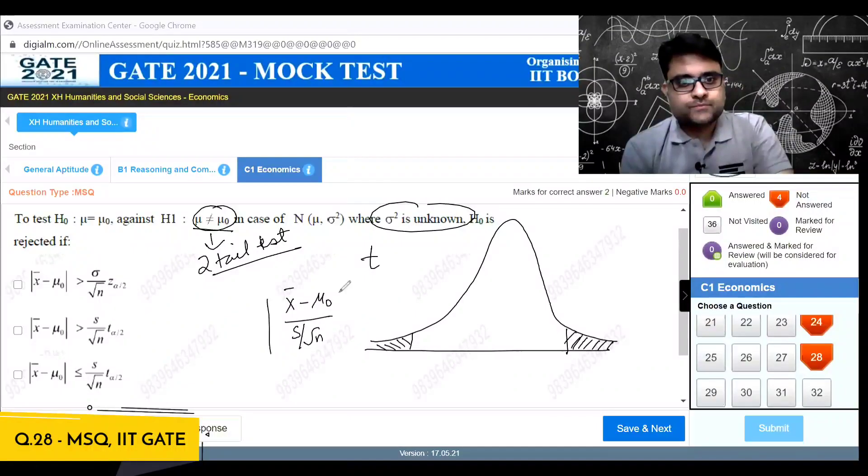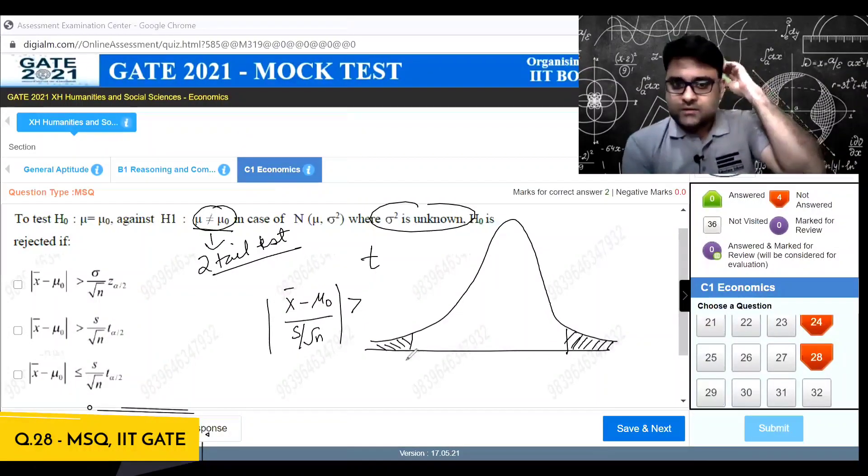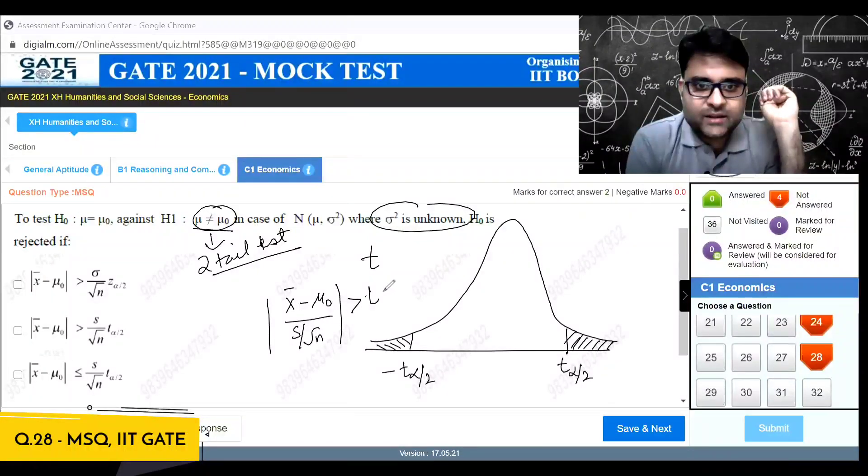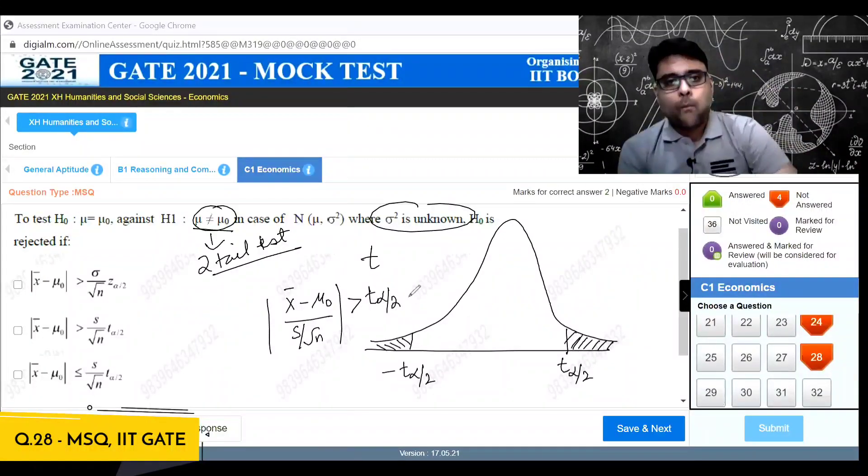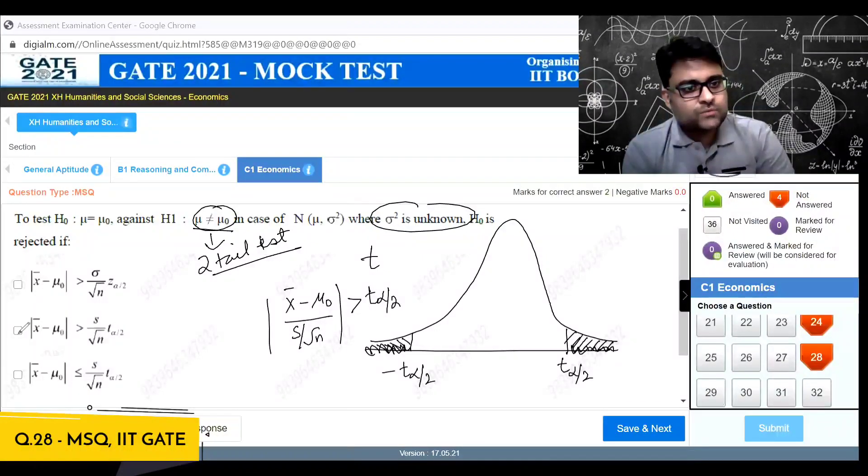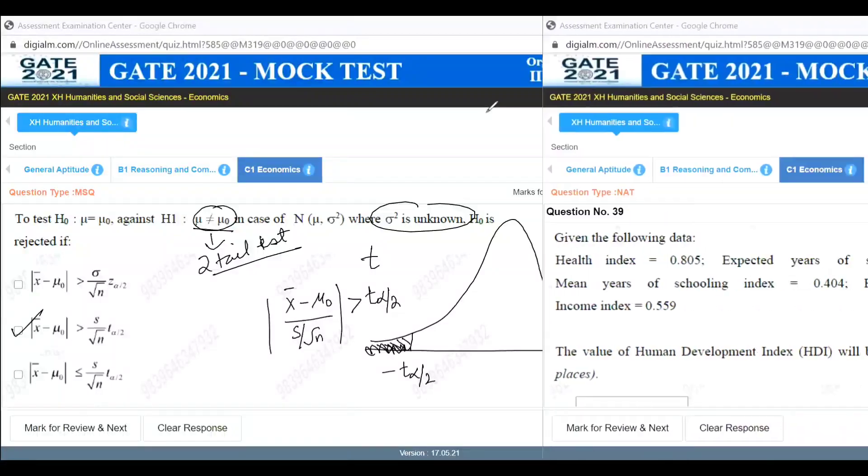The value that I get should be greater than this I call as t alpha by 2. This will be minus t alpha by 2, so this value should be greater than t alpha by 2. T mod value, x bar minus mu naught by s by root n, if it is greater than t alpha by 2, it will either lie in this region on the left or it will lie in this region. So this is when we will be rejecting it, that is x bar minus mu naught mod greater than s by root n into t alpha by 2.